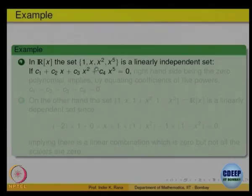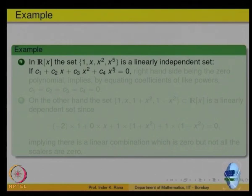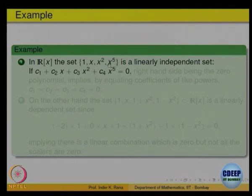In this example, it is 1, x, x squared, x to the 5. If you just know what we worked out for R5 — polynomials of degree 5 or 3 — the same proof will work for 1, x, x squared, x cubed, x to the 4, x to the 5 also. So if I take all the powers 1, x, x squared, x cubed, x to the 4, x to the 5, they are linearly independent.